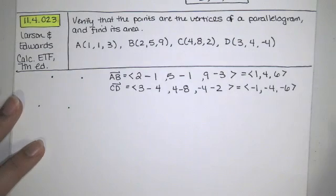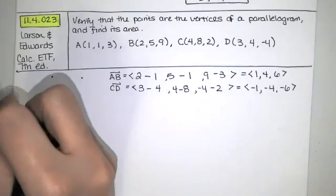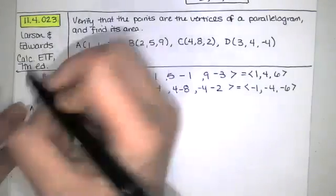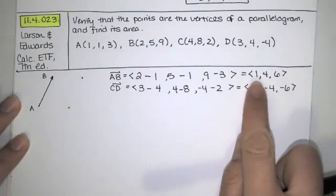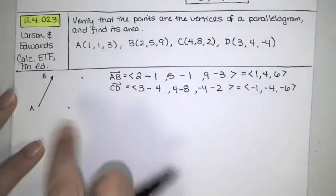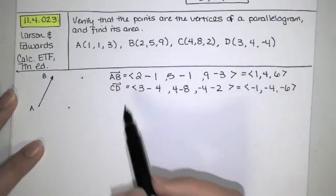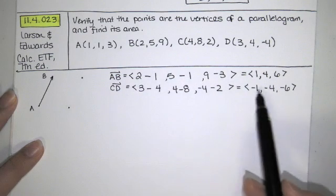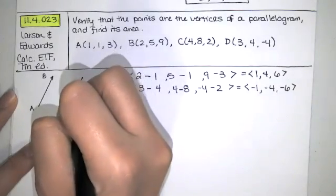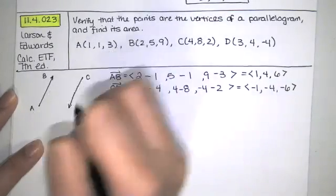Now, those two vectors are parallel to each other. They're just running in opposite directions. So for my little cartoon over here, if this is AB, and I just came up with the vector from A to B with components 1, 4, and 6, this is telling me that the vector that starts at C and goes to D is parallel. It just runs in the opposite direction. So I would say that this must be C and this must be D.